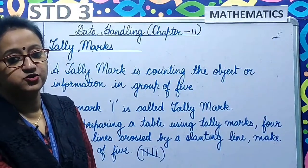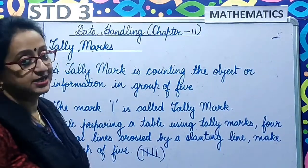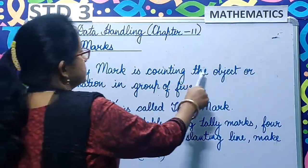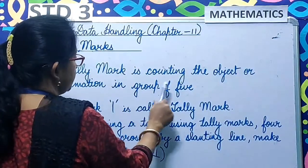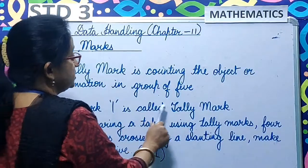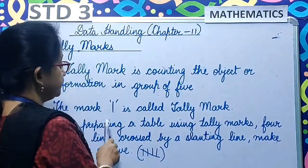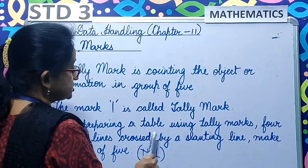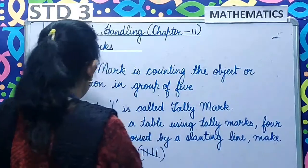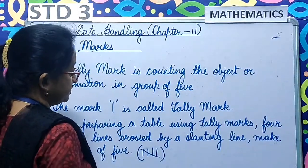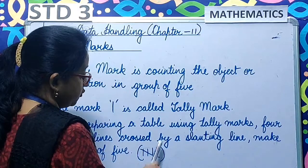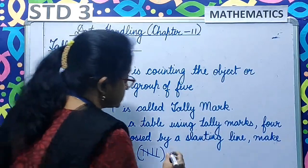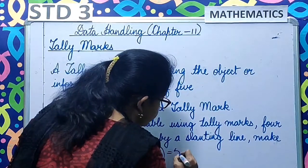The second way to show data handling is through tally marks. What is tally marks? A tally mark is counting objects or information in groups of 5. The mark I is called a tally mark. While preparing a table using tally marks, 4 vertical lines crossed by a slanting line make a group of 5.